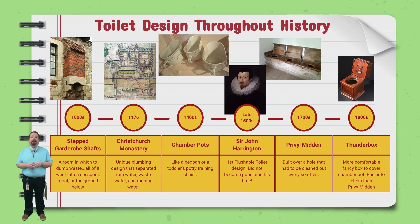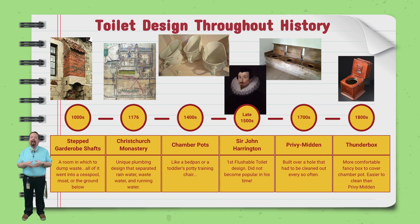A hundred years later or so, the Christ Church Monastery designed a unique plumbing system that would separate the rainwater, wastewater, and running water from each other — a significantly more sanitary system. In the 1400s, the normal way to dispose of waste was into a chamber pot, kind of like a bedpan or a toddler's potty training chair. You'd have to take it out and dump it in a specific place whenever it got full.